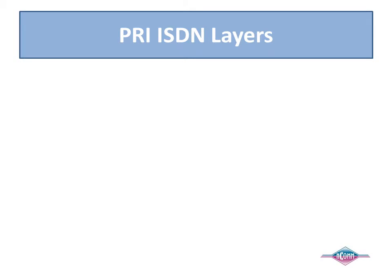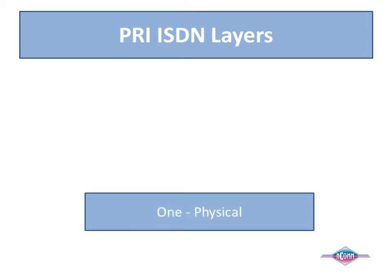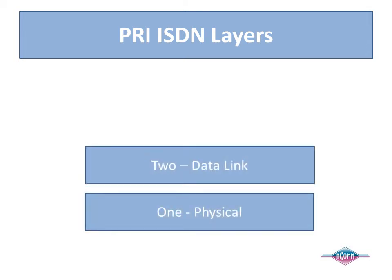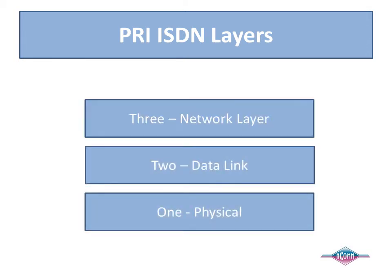Operation of ISDN takes place at the three lowest layers of the protocol stack: one, the physical layer; two, the data link layer; and three, the network layer. Each layer provides critical capabilities for Primary Rate ISDN.